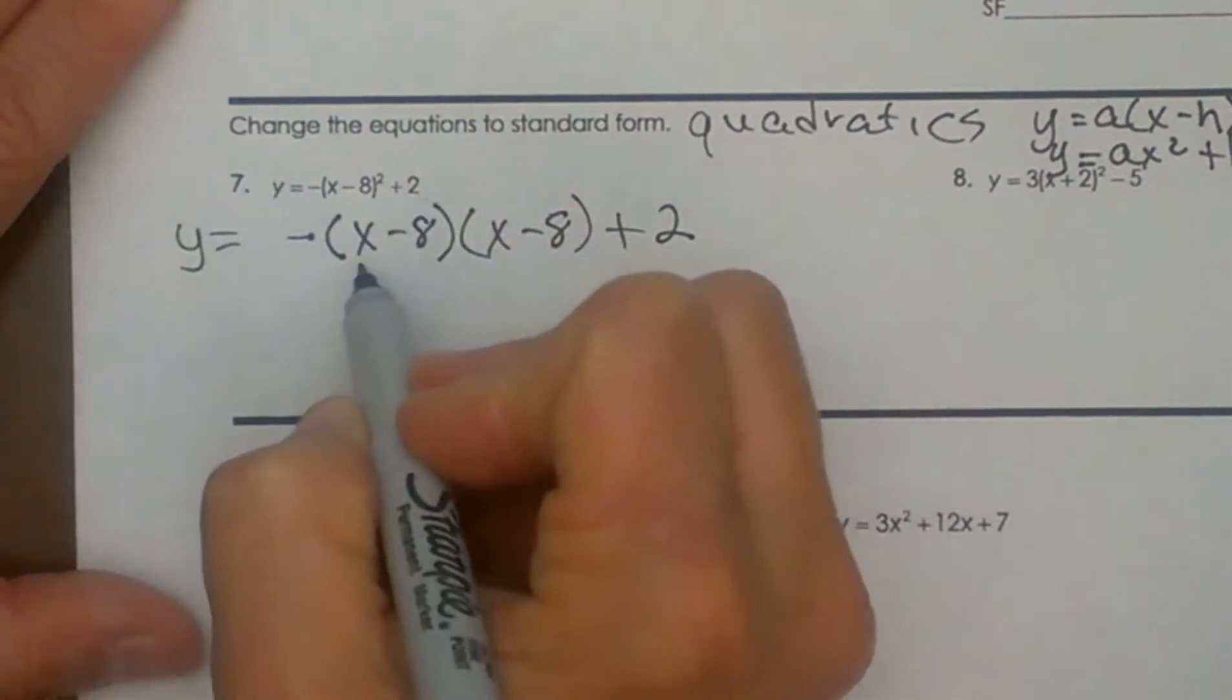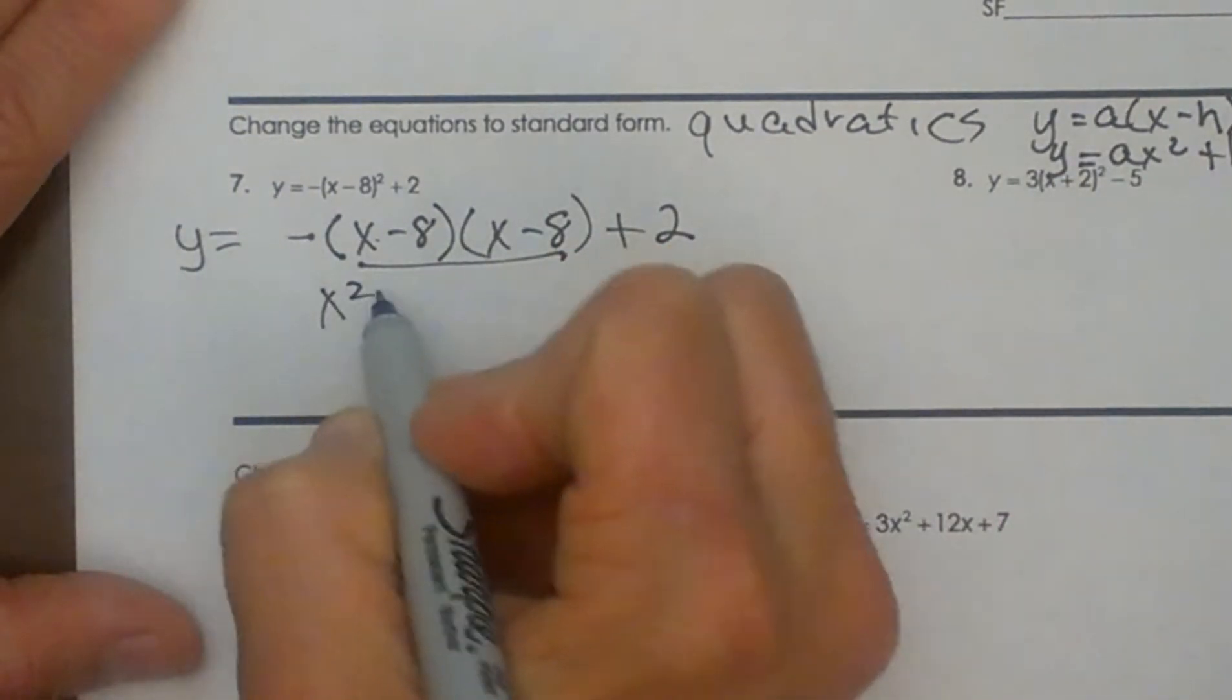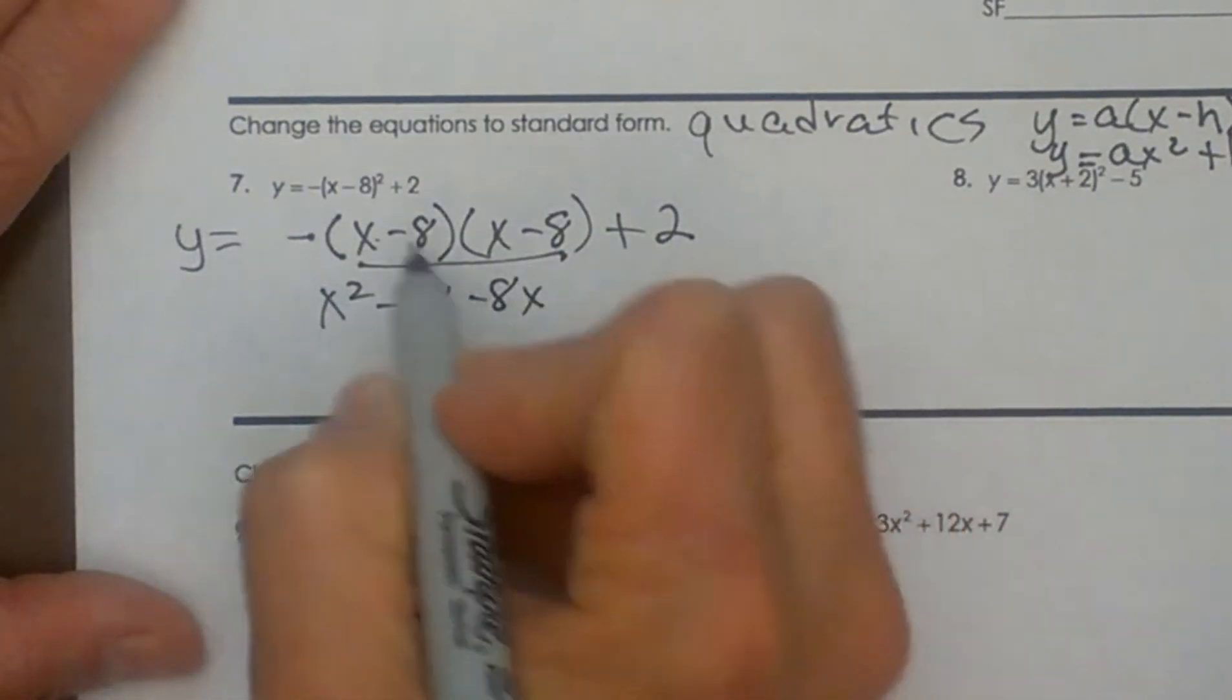Now the first thing I'm going to do is FOIL both of these together. So let's do that: first, outer, inner, and last.